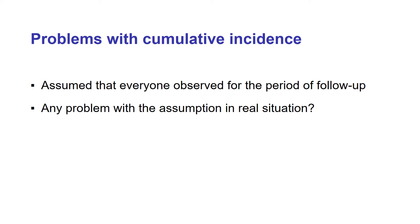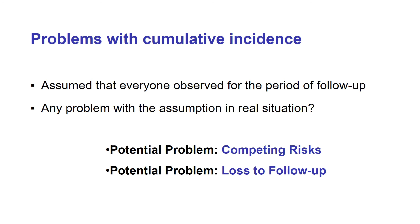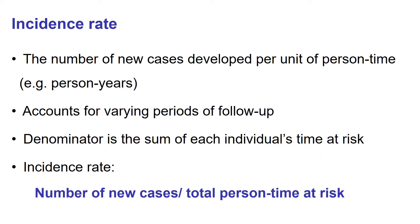There are problems with cumulative incidence because we are assuming that everyone is observed for the full period of follow-up, which is not true. We are not going to be able to observe everyone for the entire period. Why? Because people can develop other health conditions, people can die — which is called competing risks — or people can be lost to follow-up; they may move to another place or not want to respond to our surveys. That's why we need to measure incidence rate, another type of measurement of incidence.